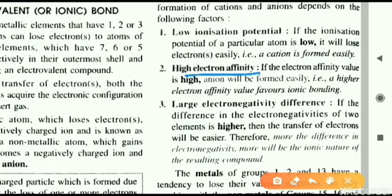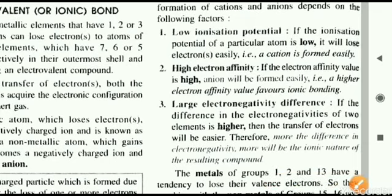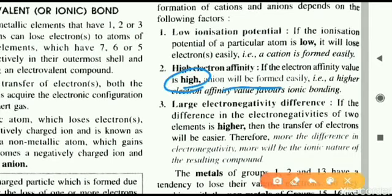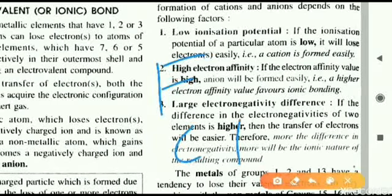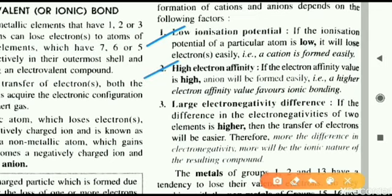The second condition is electron affinity. Ionic bonding needs both a positive and a negative ion. For the negative ion to form, high electron affinity is required. Electron affinity refers to the energy associated with gaining an electron. If electron affinity is high, an anion forms easily, and ionic bonding can take place readily. Halogens such as chlorine have maximum electron affinity.